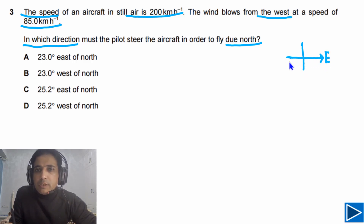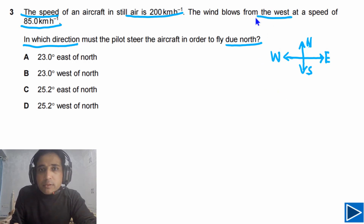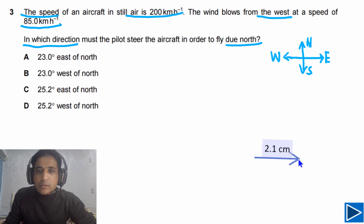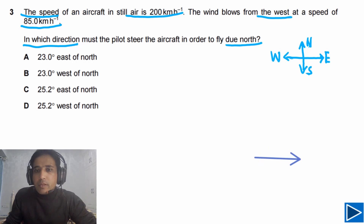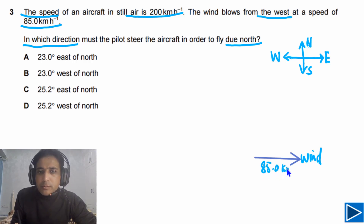To the right we take east, to the left we take west, upwards we take north, and downwards we take south. The wind is blowing from the west, meaning it is directed to the east. We can draw an arrow for the direction of wind — this is the wind, with speed equal to 85.0 kilometers per hour.